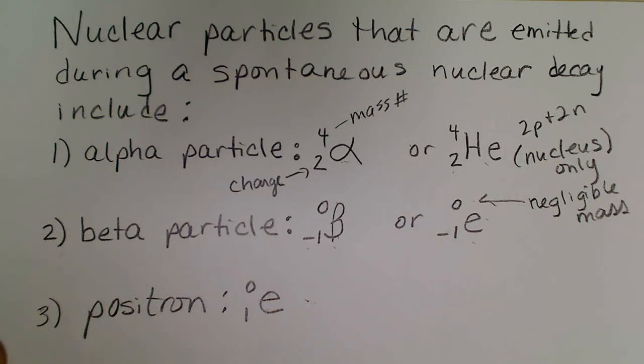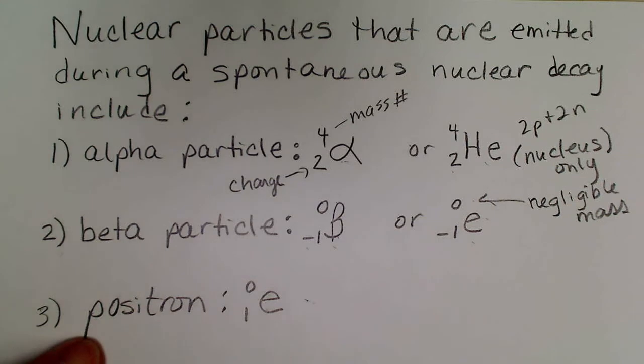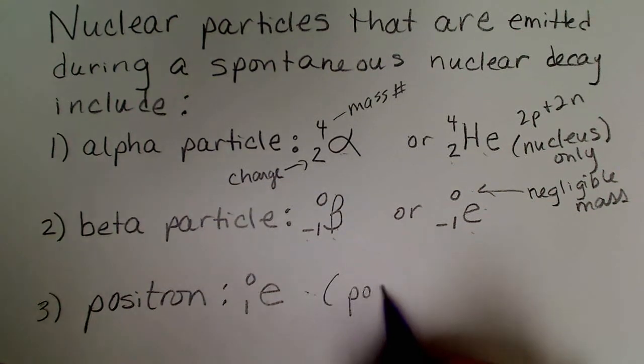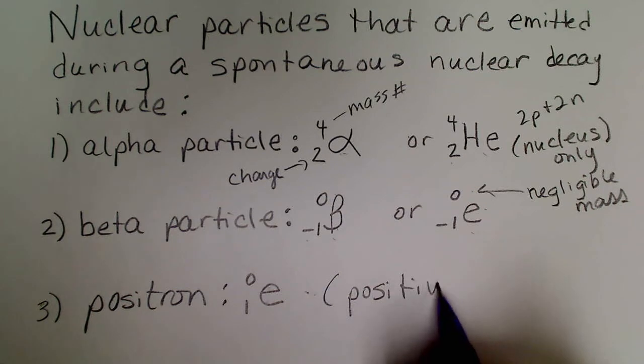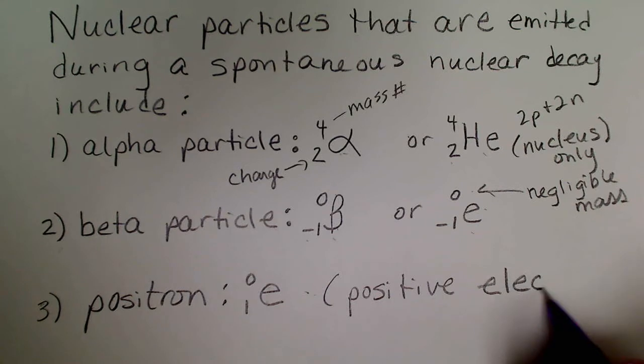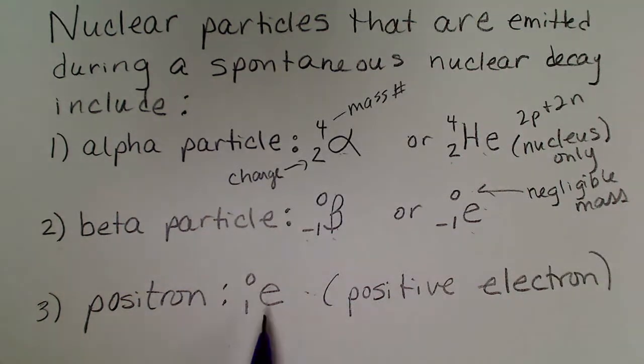Another particle that is emitted during a nuclear process is a positron. A positron is actually a positive electron. So that sounds like an oxymoron because we're taught that electrons are negative, but it's a particle that has no mass and is positive.